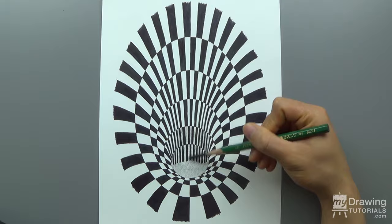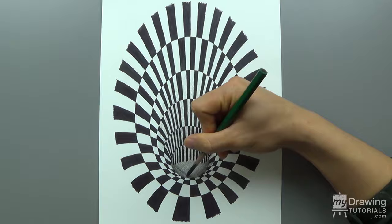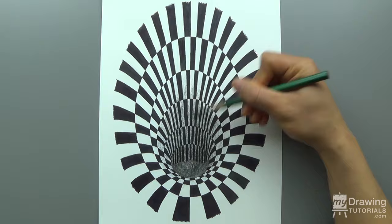The last step is to create a dark gradation at the center hole. I'll use a 9XXB graphite pencil to put in the base tone. You can also use a 4B or 6B pencil for this.